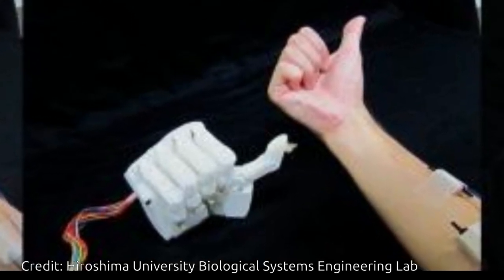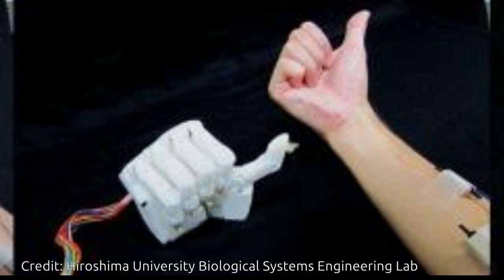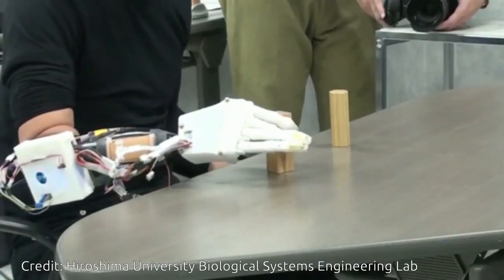Electrodes in the socket of the prosthetic equipment measure electrical signals from nerves through the skin, similar to how an ECG measures heart rate. The signals are sent to the computer, which only takes five milliseconds to make its decision about what movement it should be.